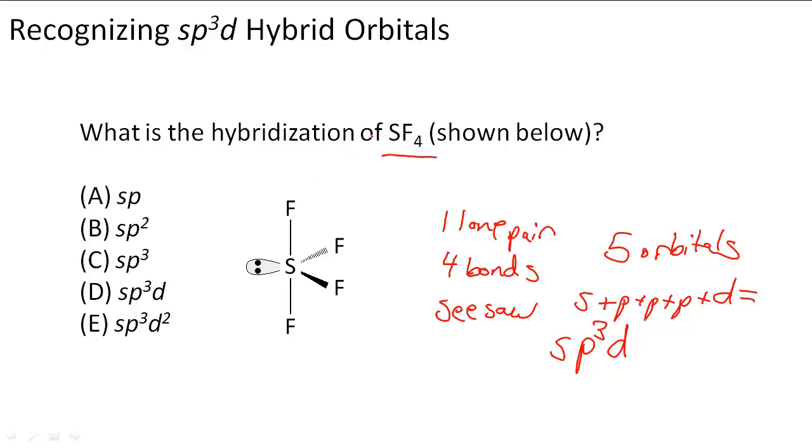Remember hybridization when it's not mentioned is usually talking about the central atom, which is S. So we know for this one that D is the answer because it has SP3D hybridization based on the five orbitals that it has.